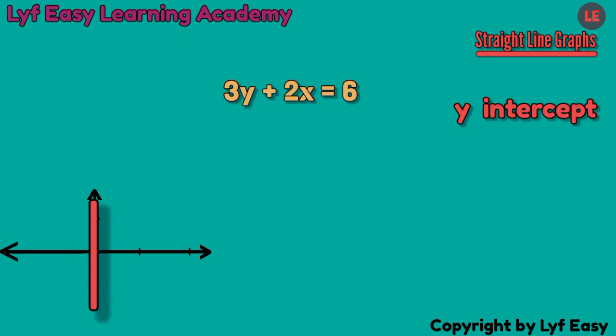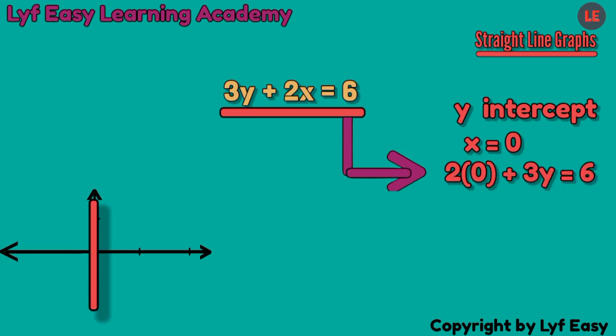For now, let us see how to sketch the line graph on this given equation: 3y plus 2x equals 6. Remember I said that to find where it will cut through on y-axis, we make x equals 0, so when we do that on this equation we find y equals 2.